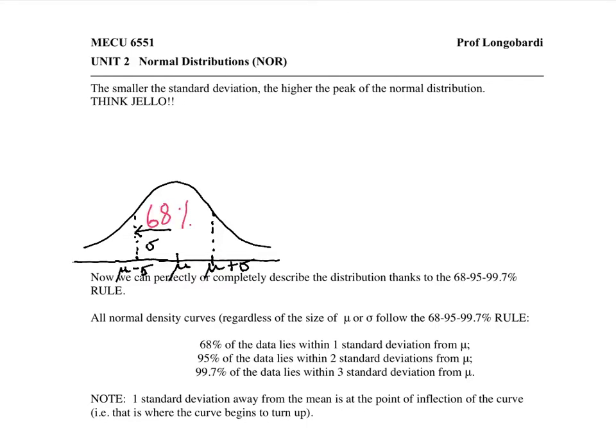Within two standard deviations, we would find 95% of the observations, and within three standard deviations, we would find 99.7% of the observations.